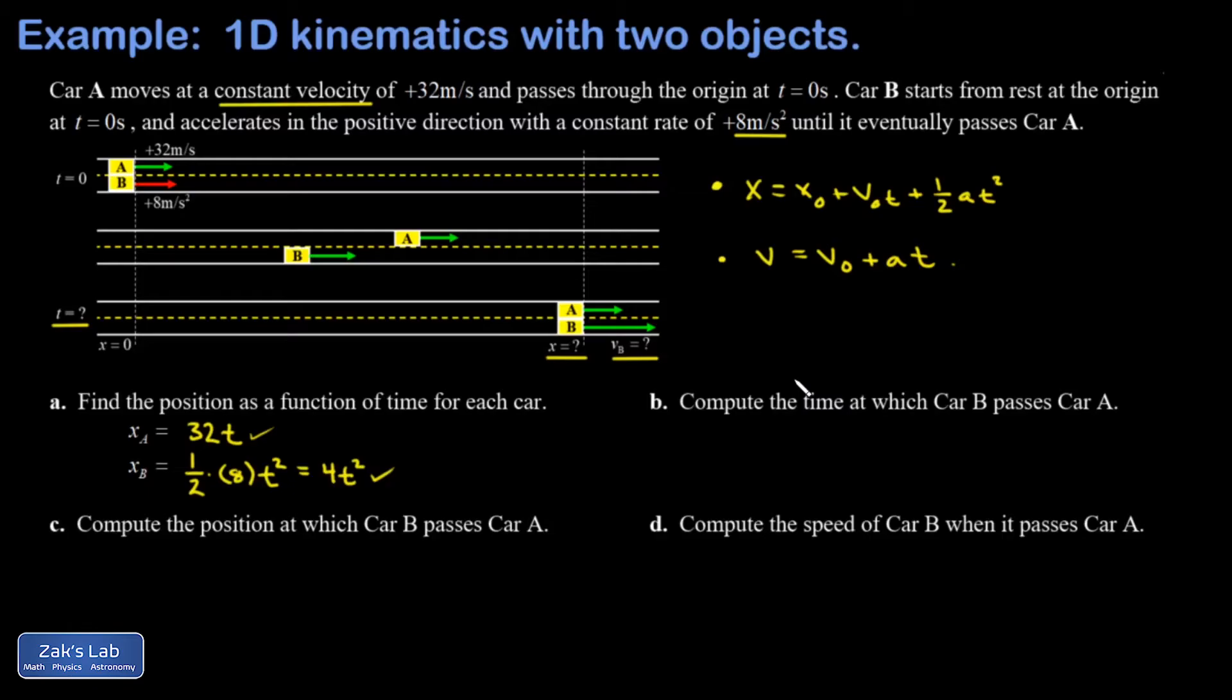That allows me to answer part B: compute the time at which car B passes car A. The key to this is to say, well, when car B passes car A, the two cars are in the same place at the same time. So I just set those two position functions equal to each other and ask what time is it. I get 32t equals 4t squared. I can cancel a t out of this, but I want to point out that when I do that, I'm eliminating one of the solutions to this quadratic equation. T equals zero is a solution.